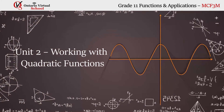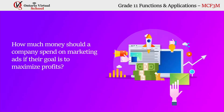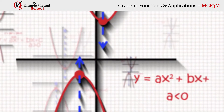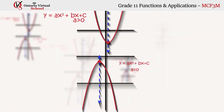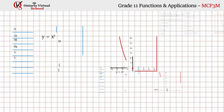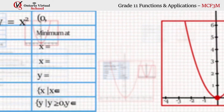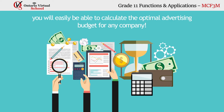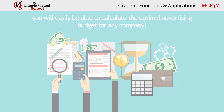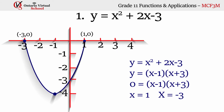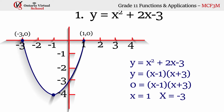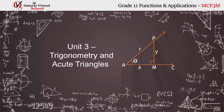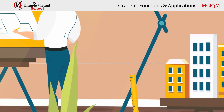Unit 2: Working with Quadratic Functions. How much money should a company spend on marketing ads if their goal is to maximize profits? The answer to this problem can actually be found by modeling the quadratic function it implies. Once you complete this unit, you will have learned how to identify key characteristics of the function from its graph, calculate the optimal advertising budget for any company, simplify quadratic expressions, and solve a variety of quadratic equations.